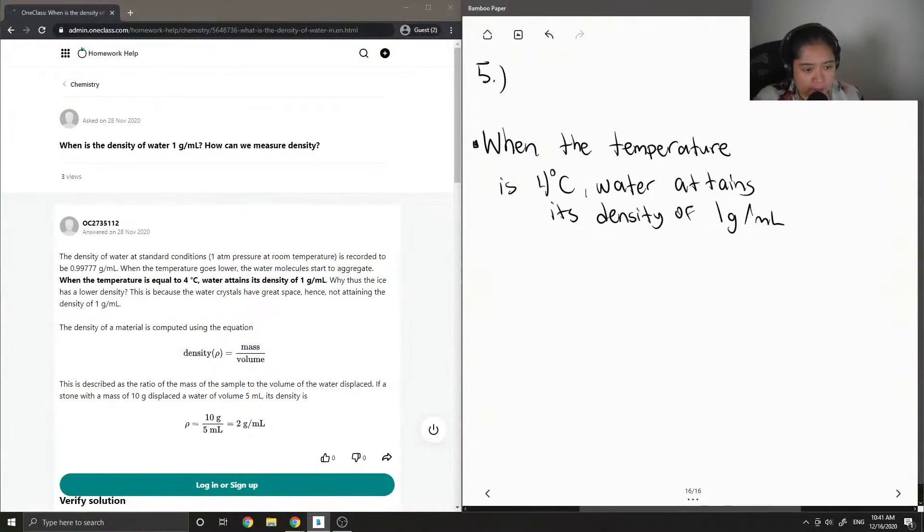We can calculate density by using the equation where density is equal to mass over volume. So depending on the mass of the sample, it's the ratio of the mass of the sample to the volume of the water that is displaced.